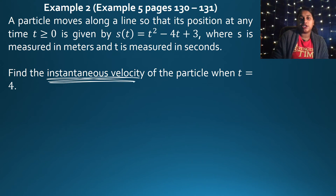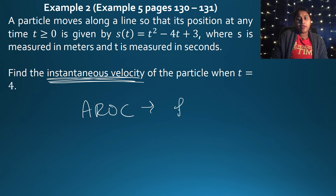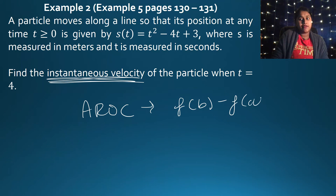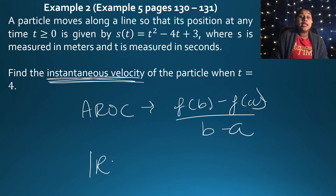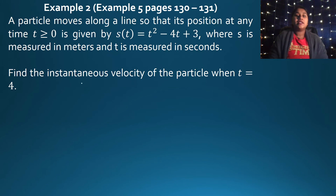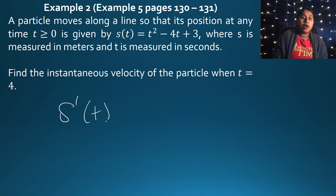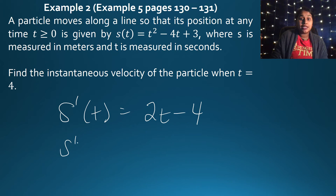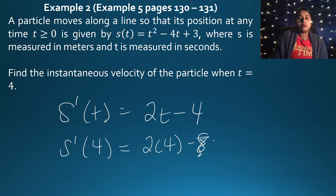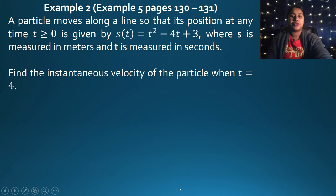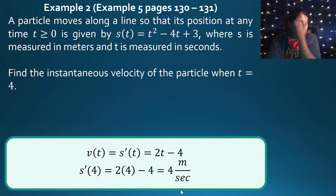For instantaneous velocity at T equals 4, we need the derivative S prime, which equals 2T minus 4. Evaluating S prime of 4 gives 8 minus 4 equals 4 meters per second. That's the instantaneous velocity — the derivative evaluated at that specific point.